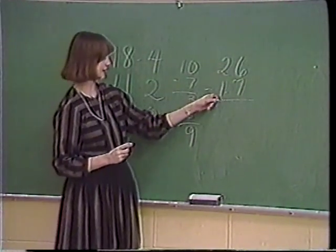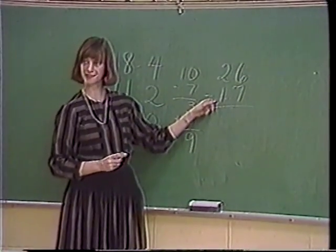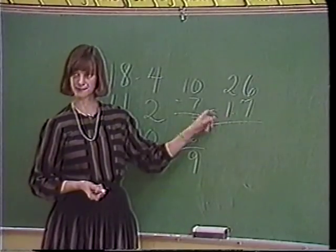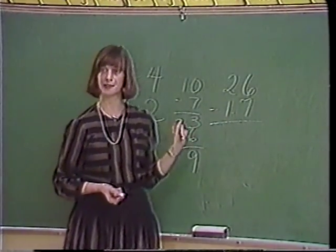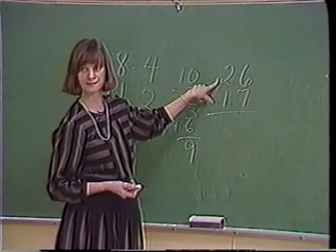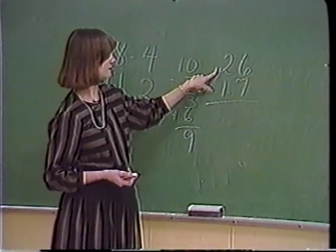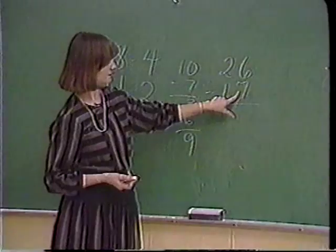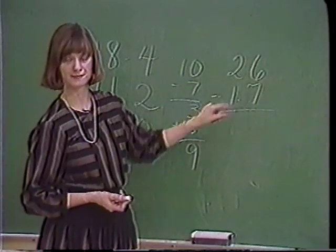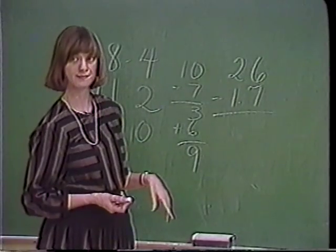So 20 take away 10 was 10. Elizabeth, what was your answer? It was 18. Okay, Elizabeth: I took 10 off the 20, and that was 10. And I took 6 off the 7, and that was 0. And I took 1 off the 10, and that was 9.